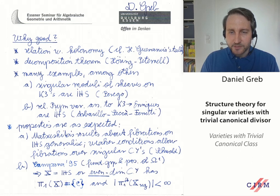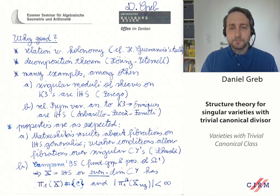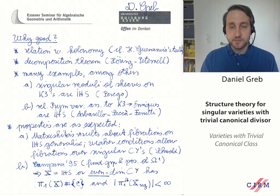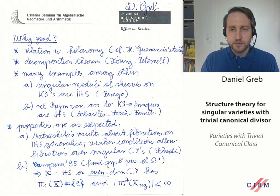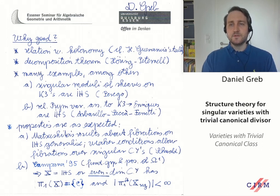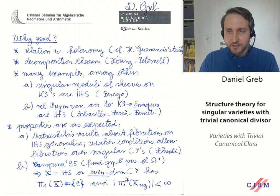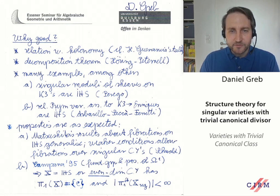This leaves an open question where we don't have much idea about methods: what about odd-dimensional Calabi-Yaus? In the even-dimensional case, the Euler characteristic is positive, and this is the key to using Campana's work. In the odd-dimensional case it's zero, so you cannot use that. This is what I wanted to tell you about the structure theory of singular varieties with trivial canonical divisor. I thank the organizers very much for making this happen, and I look forward to discussing questions with you next week.